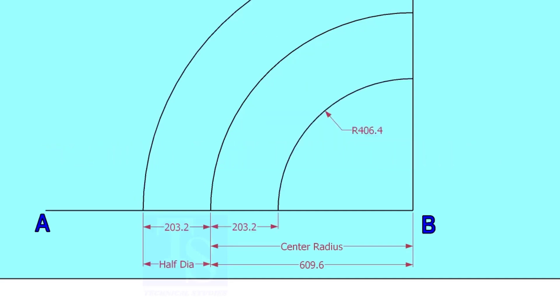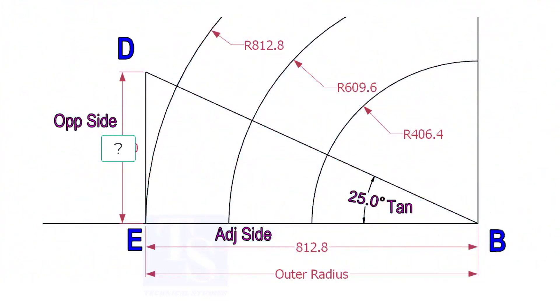Mark the half OD arcs on both side of the center line. Mark a line 25-degree rotated from the base line AB.